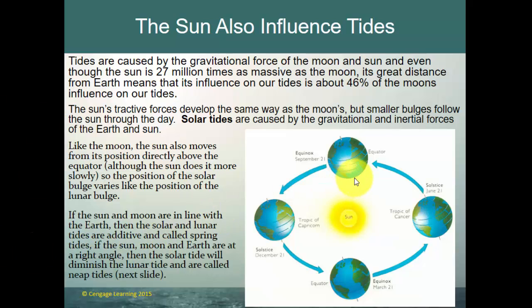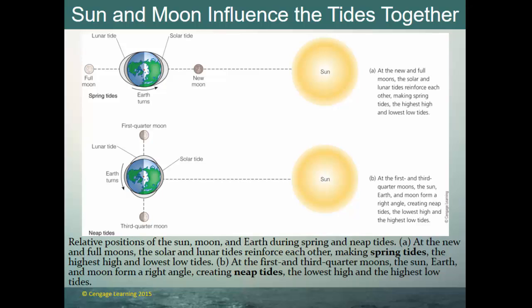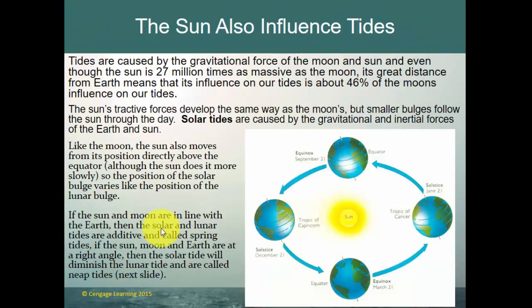At the equinox — the beginning of fall or spring — the sun is directly over the equator, and that's where the solar bulge would be. In northern hemisphere winter when we're tilted away from the sun, the bulge is over the Tropic of Capricorn. In June, the sun is directly over the Tropic of Cancer, and that's where the bulge would be. If the sun and moon are in line with the earth, the solar and lunar tides are additive — called spring tides. If the moon and earth are at a right angle, the solar tide diminishes the lunar tide — these are called neap tides.